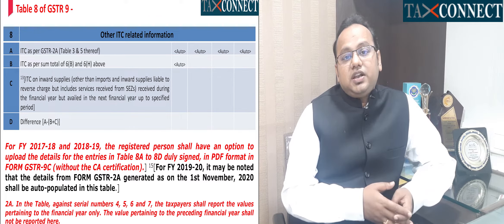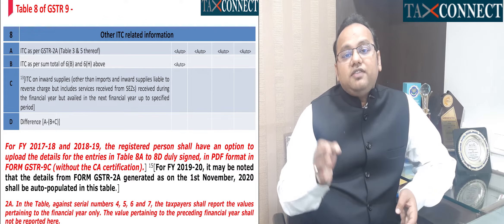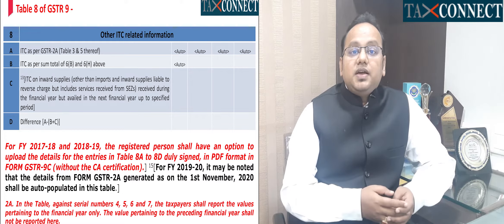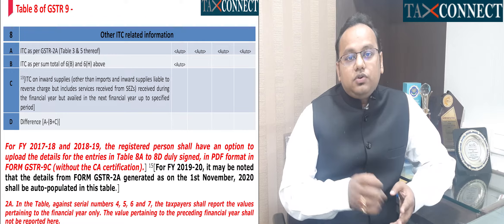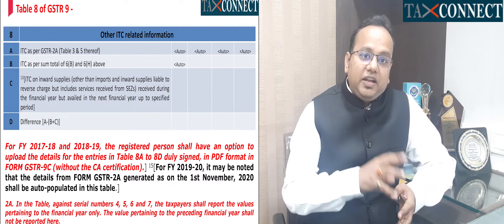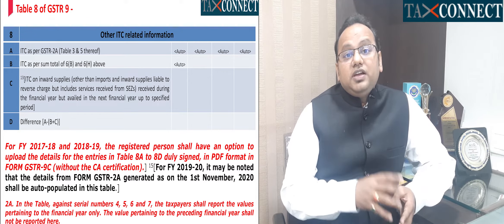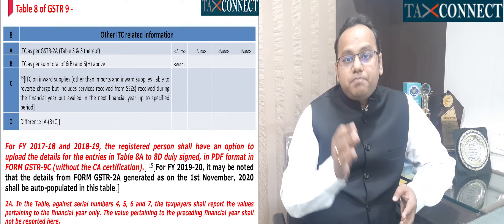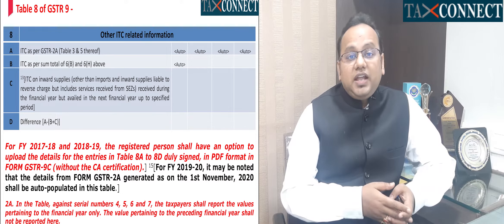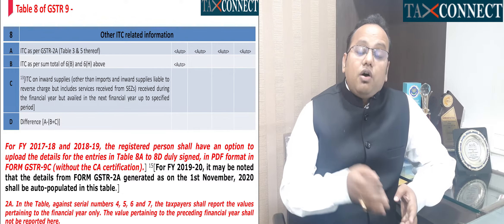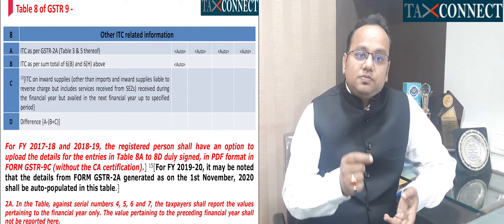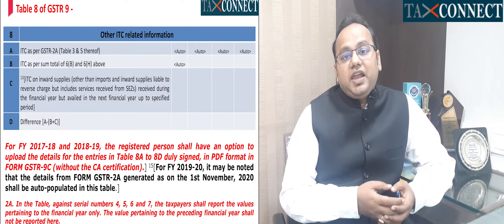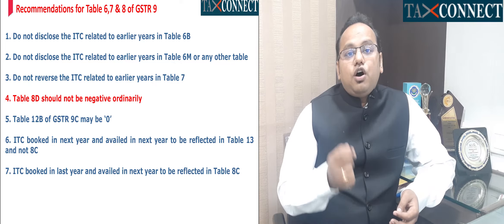It is very clear in instruction number 2A — a major change from October 2020 — that for table numbers 4, 5, 6 and 7, only those figures pertaining to the financial year should be reflected. Therefore, one needs to cull out all the input tax credit of 18-19 taken in 3B of 19-20 and reflect in column 6B only those ITC pertaining to invoices of 19-20. The moment you put that figure in 6B, it would be reflected in table 8B — a matching of apple versus apple.